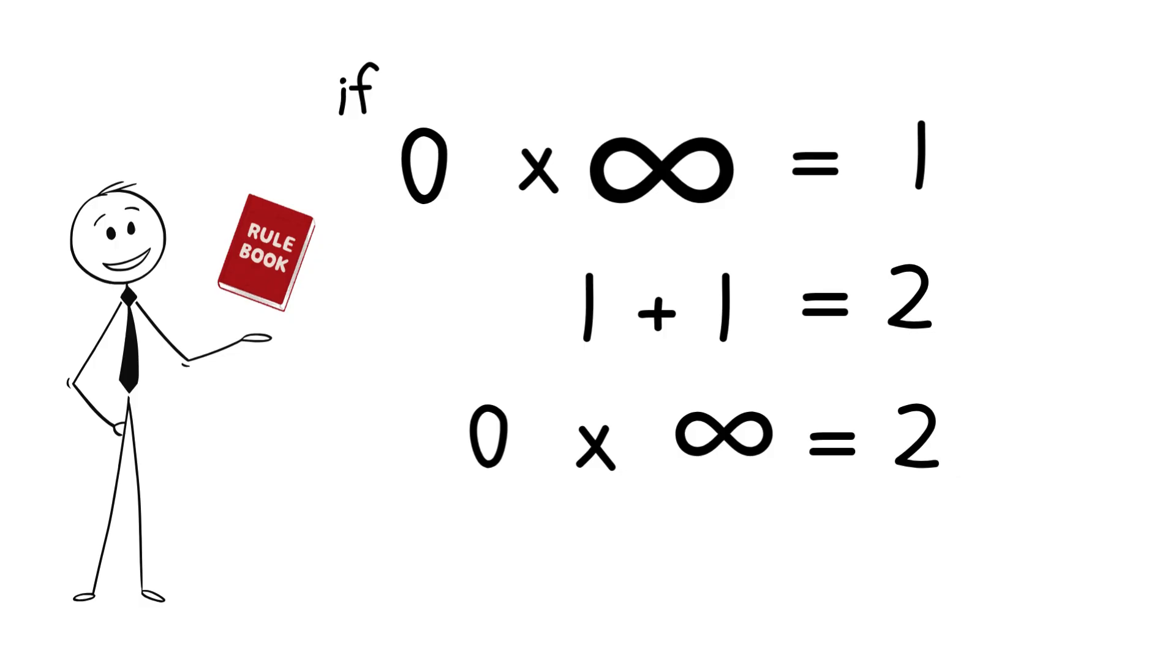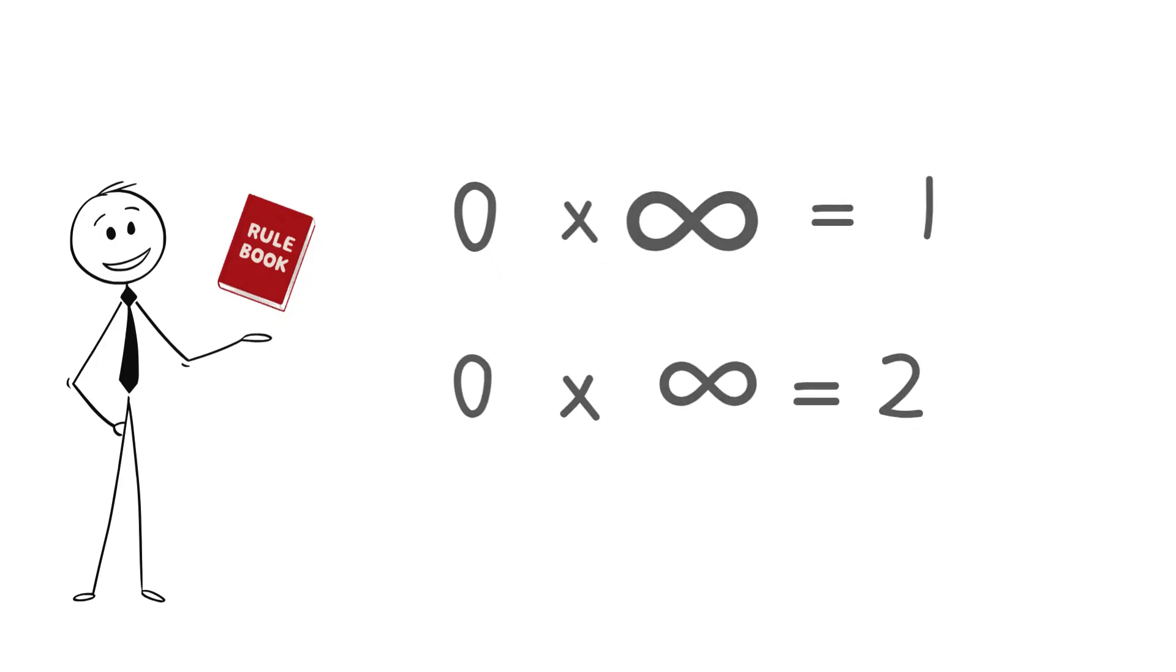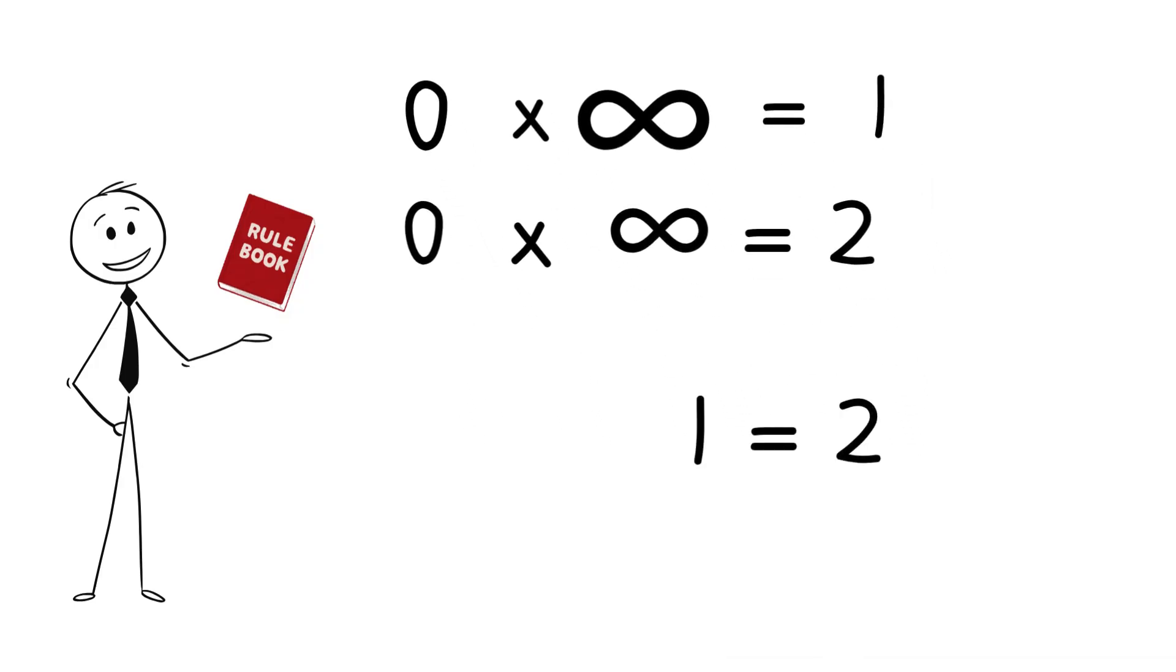And now we've broken everything. We have zero times infinity equals one and zero times infinity equals two, which means one equals two. This is a paradox.